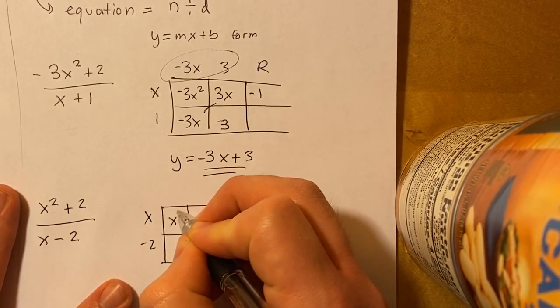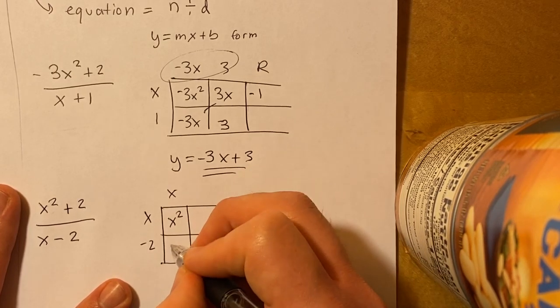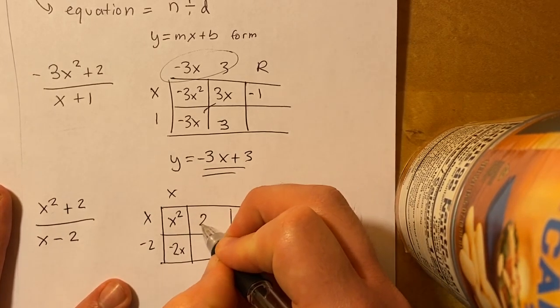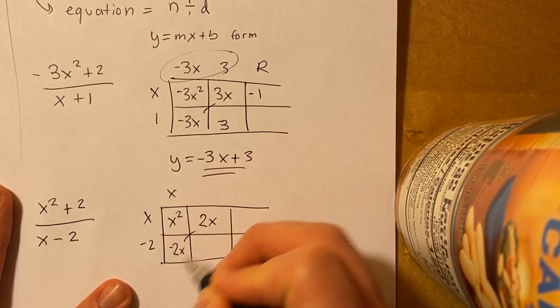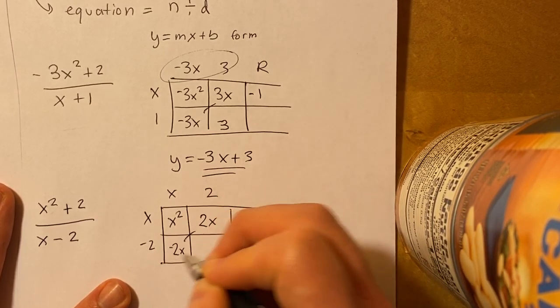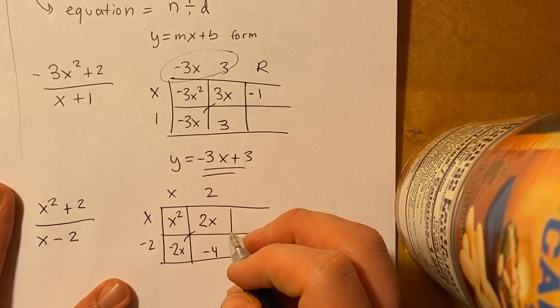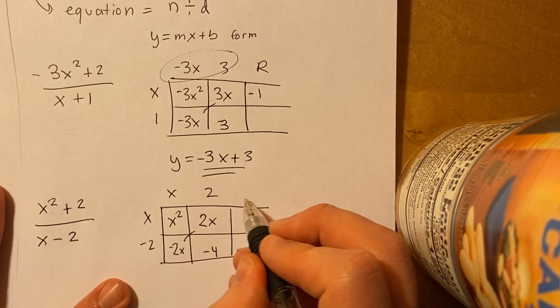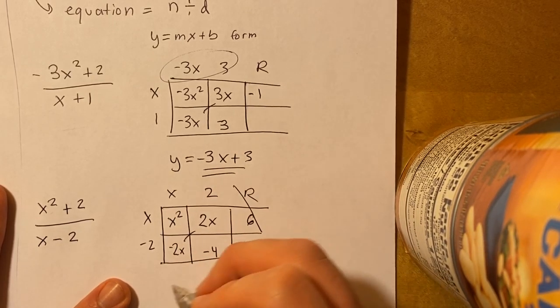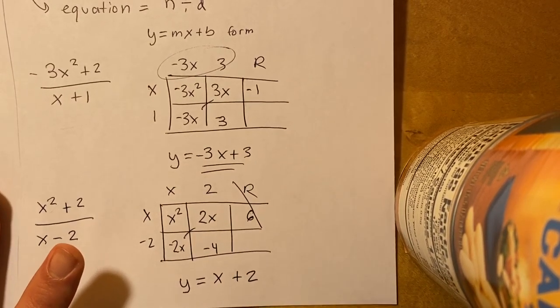And then put our x squared there, right? And then I know that x times x is x squared. Carry it down. Negative 2x. There's no x term in there. So this would be a positive 2x. They cancel out. And then 2 times x is 2x. Carry that down. That is negative 4. And you'll have a remainder of 6 to get that positive 2. But we don't, again, we don't need to care about the remainder. So you know that the slant asymptote is y equals x plus 2. Pretty cool.